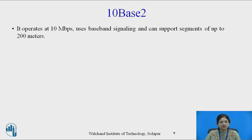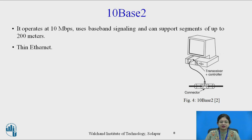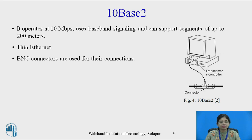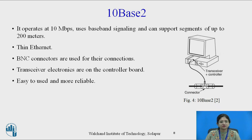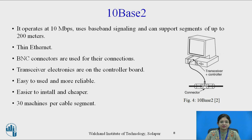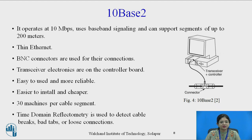The second type of cabling is 10Base2. It operates at 10 Mbps speed, uses baseband signaling, and can support segments of up to 200 meters. It is also known as Thin Ethernet. BNC connectors are used for connection, making a T-junction instead of a vampire tap. The transceiver electronics are on the controller board, making it easy to use, more reliable, easier to install, and cheaper. However, only 30 machines are allowed per segment. Time Domain Reflectometry is again used to detect cable breaks or loose connections.